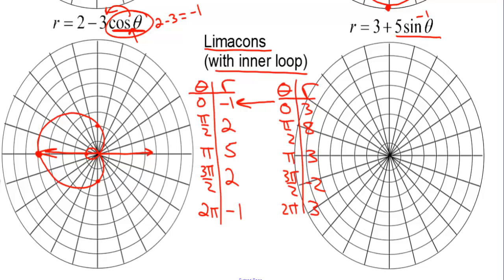Plotting: at 0, r is 3; at pi over 2, r is 8 — all the way up; at pi, r is 3; at 3 pi over 2, r is negative 2, which causes the inner loop. Starting with the longest r up at the top, go a little wider, cut through the pole, there's the loop, cut through the pole again, go a little wider, and come around. There is a limaçon with an inner loop. How do we know? We have a negative r.